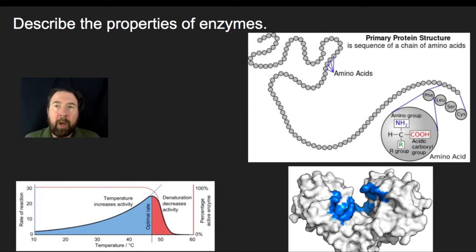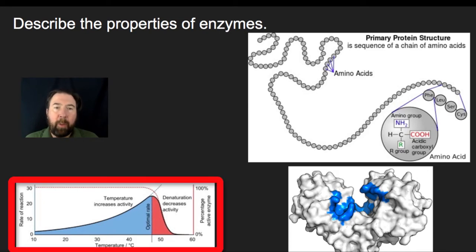Because amino acids have R groups and those R groups have properties, the environment in which you put the protein is going to strongly impact how it folds up. For example, if you change the temperature, enzymes are going to have slightly different shapes in different temperatures. At lower temperatures, you're going to see fewer interactions between enzymes and their substrate.